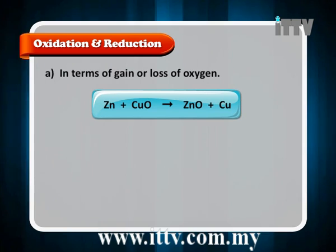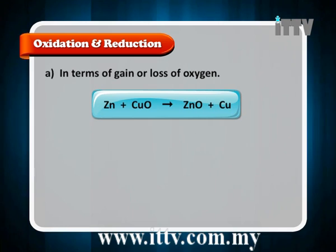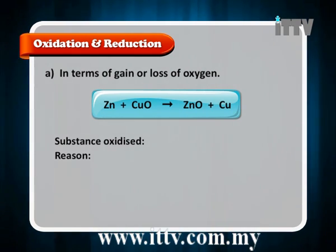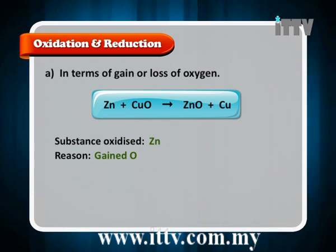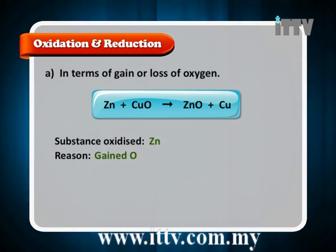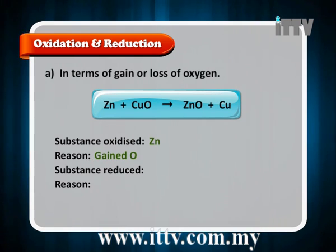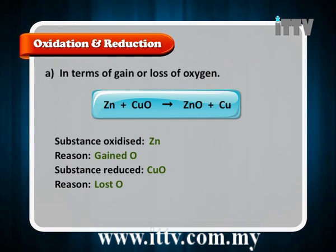In terms of gain or loss of oxygen, let us look at the reaction between zinc and copper oxide, whereby this produces zinc oxide and copper. The substance oxidised here would be zinc, because zinc has gained oxygen. The substance reduced here would be copper(II) oxide, because copper(II) oxide has lost oxygen.